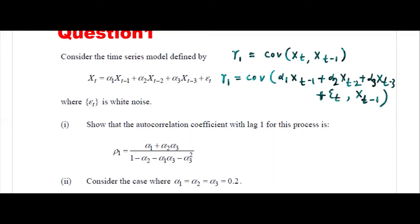If you write it that way and find the first term, it will be alpha 1 times the covariance of Xt minus 1 with Xt minus 1. That will be alpha 1 times gamma 0. The difference here is 2, and E_t with Xt minus 1 is 0 because we're finding gamma 1. So from gamma 1, if you want to find rho 1, you divide by gamma 0. You can also use Yule-Walker equations to find this.